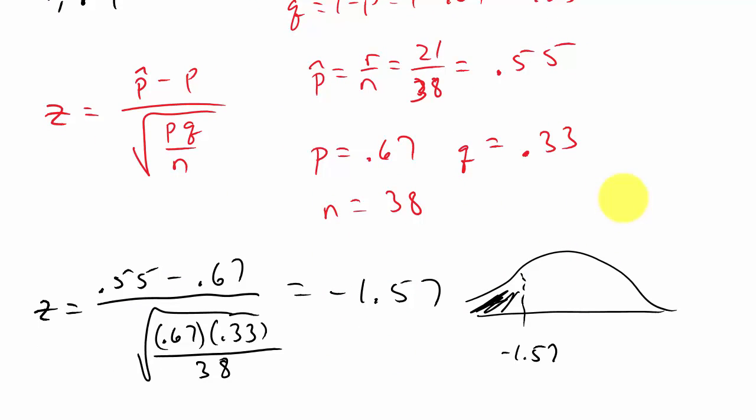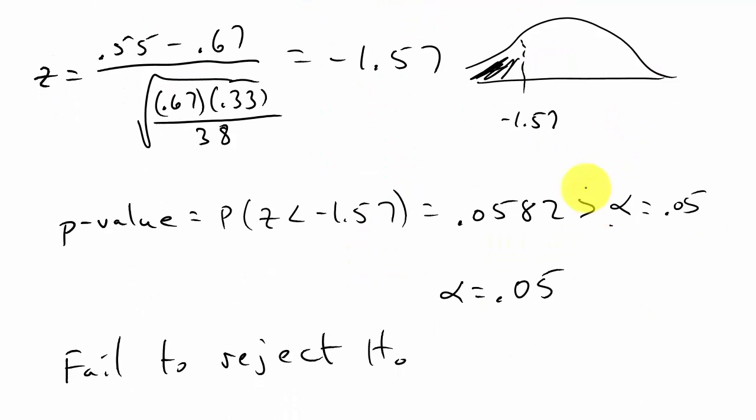So what does that mean? Well, it means that at the 5% level of significance, there is insufficient evidence to say that the proportion of athletes who graduate from this certain college is less than 67 percent. So we can't—you fail to reject the null hypothesis, so we don't have enough evidence to say that the graduation rate is lower. We can't say that, and that's based on what we calculated here.